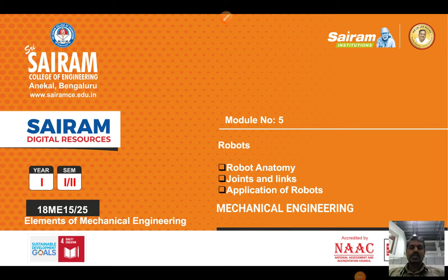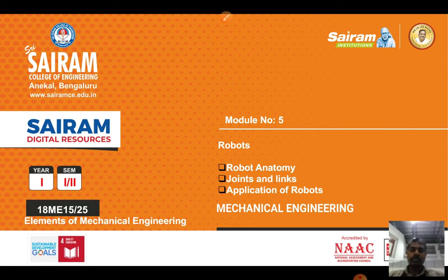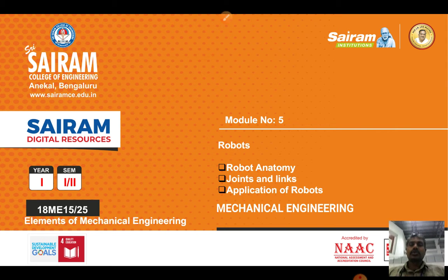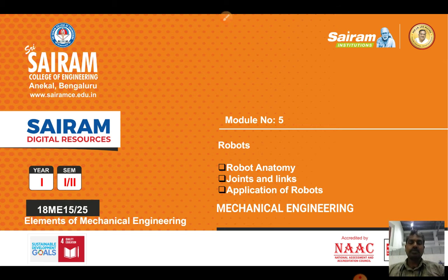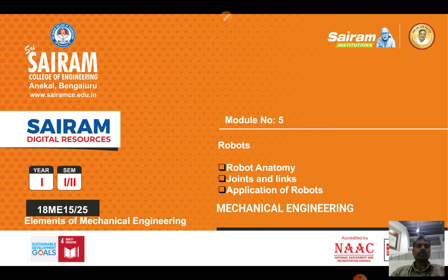In this video we are going to discuss about robots — what is a robot and what is robot anatomy, how the joints and links will be there for the application of robots. In the subject elements of mechanical engineering, module 5, we are going to discuss about the advanced manufacturing technologies of robots. In the previous videos we have seen CNC machines, milling machines and their operations.